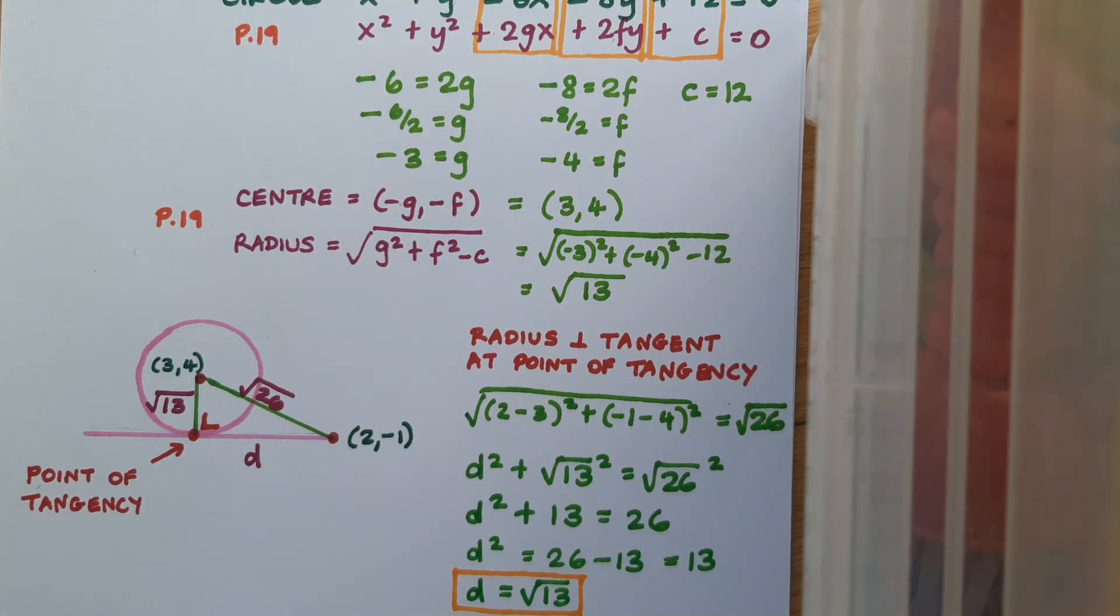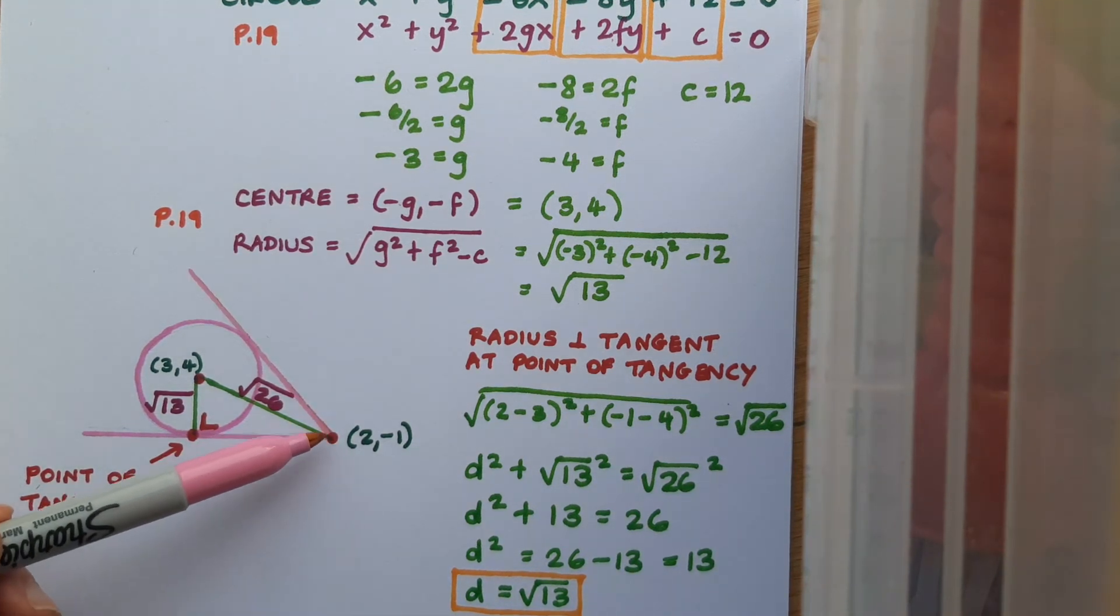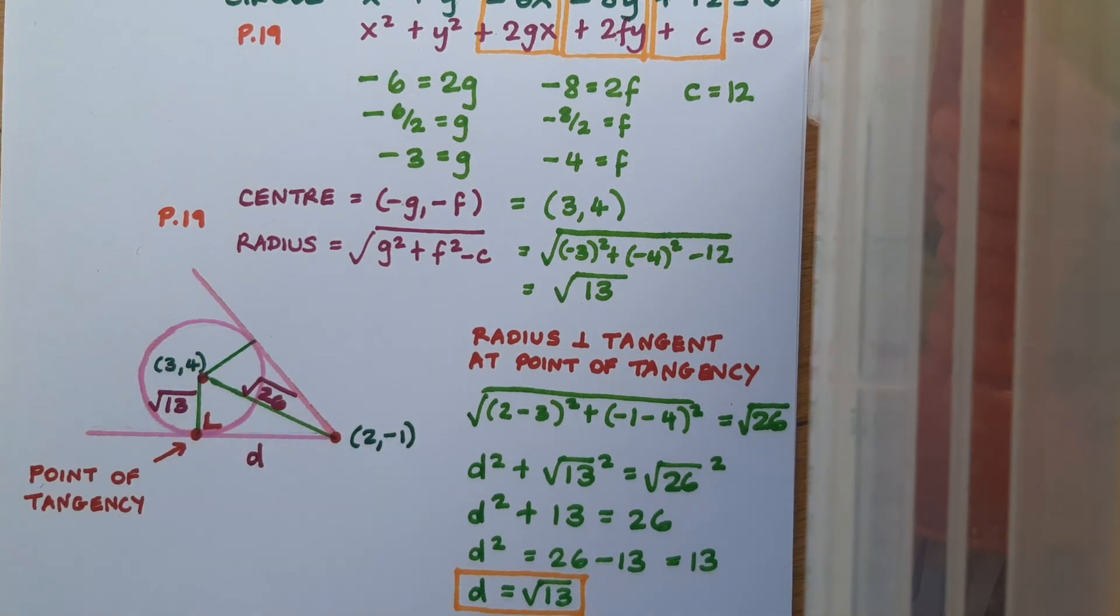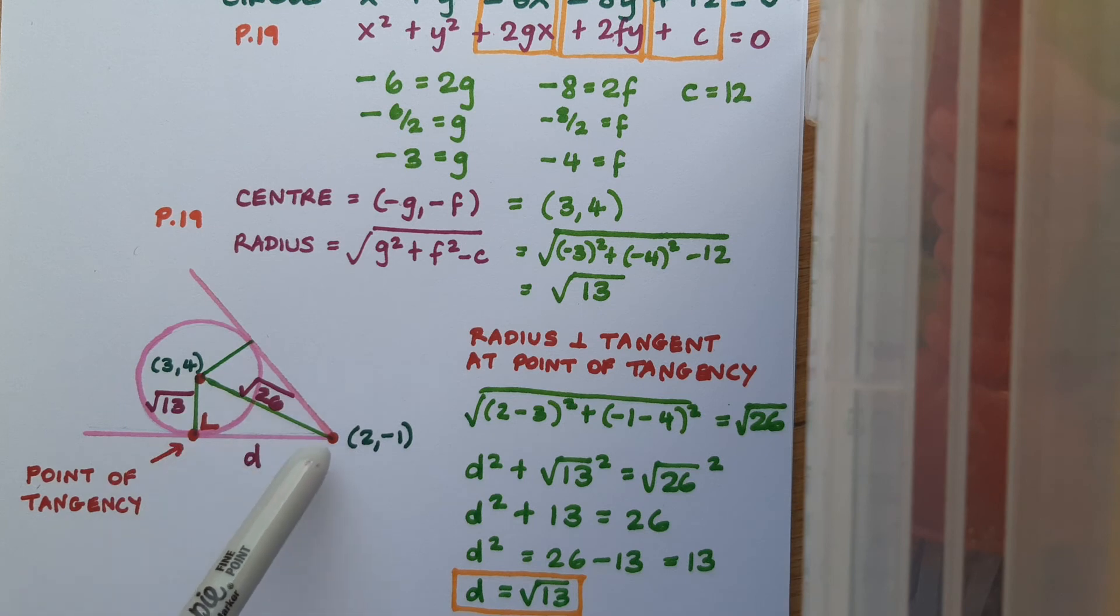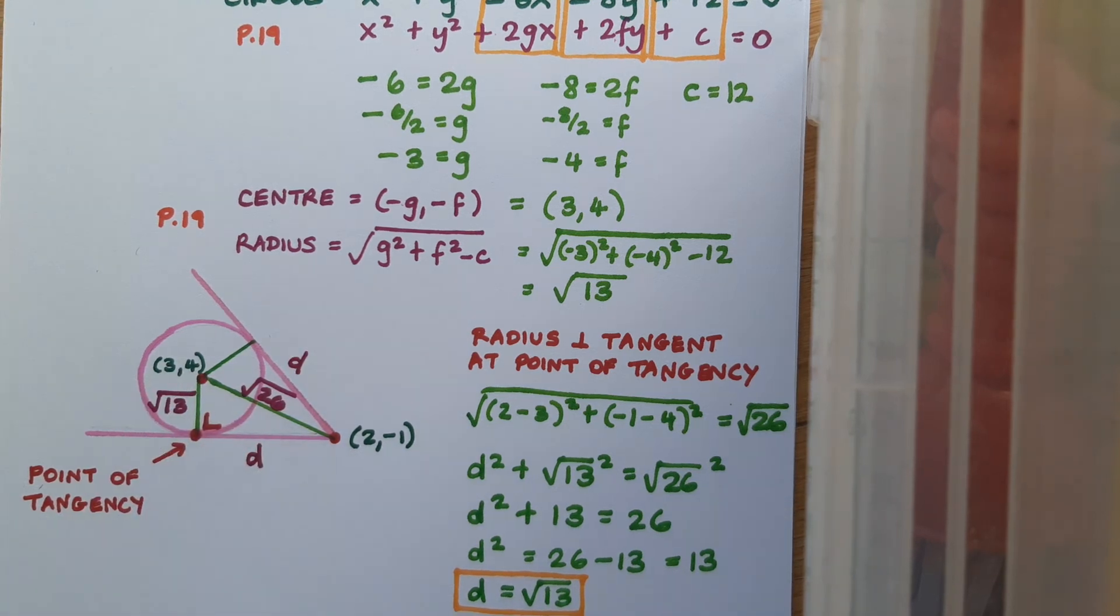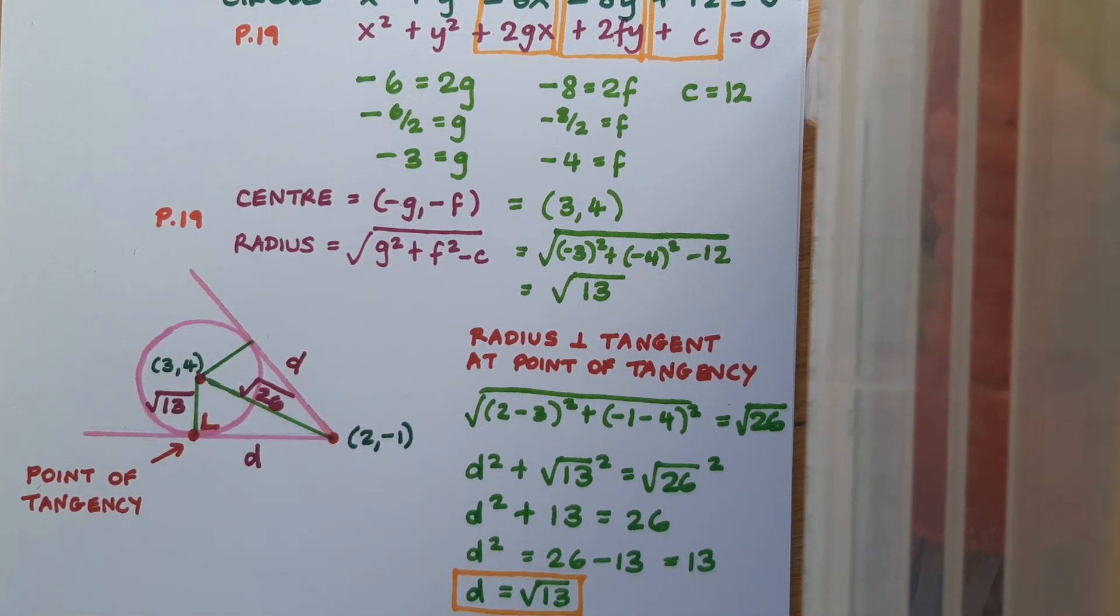As a little aside, it's interesting to note that this is not the only tangent that I can draw from (2,-1). I could draw another tangent in this direction. And these two triangles are actually identical. So the distance from the point (2,-1) to the circle in both cases is d, in this case √13.